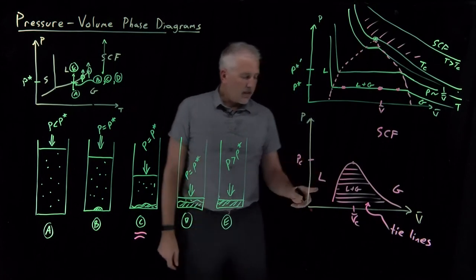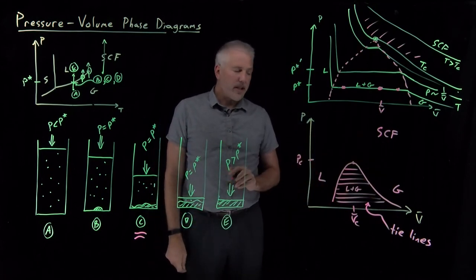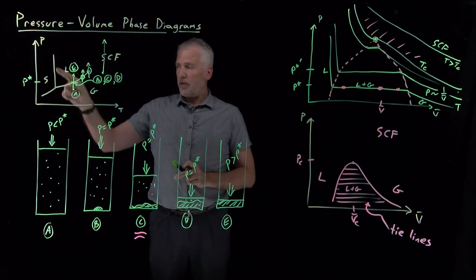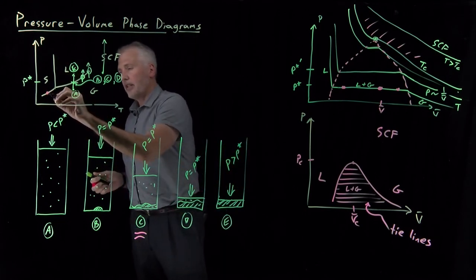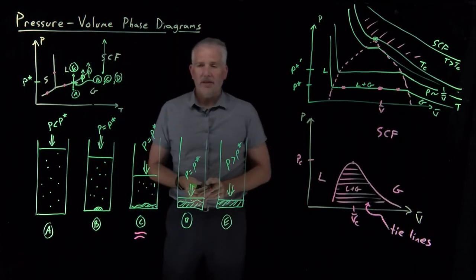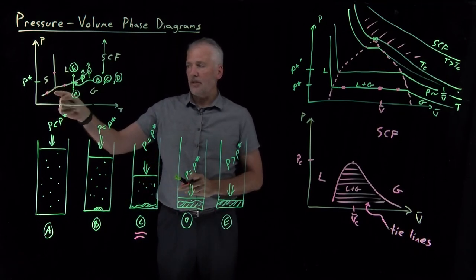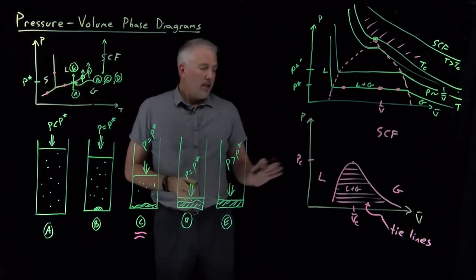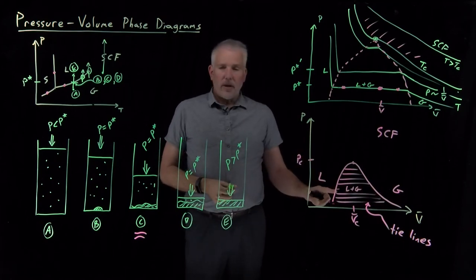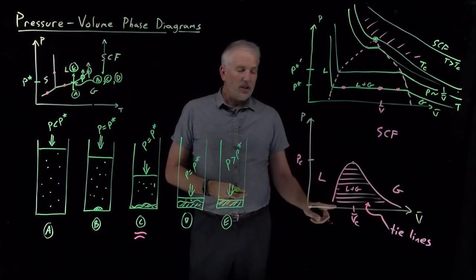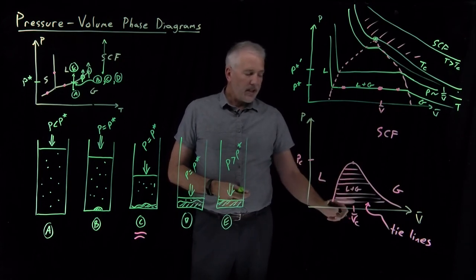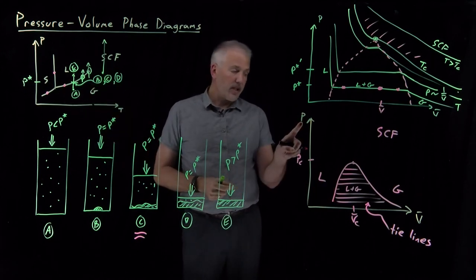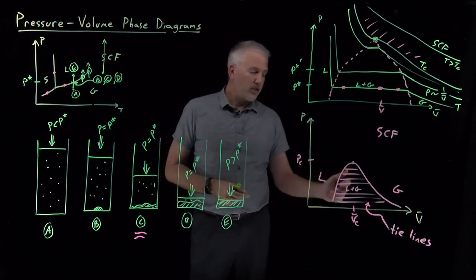Another important thing to recognize about this pressure-volume phase diagram: on a pressure-temperature diagram, the phase coexistence curves are lines — anywhere along one of those lines I have two phases in coexistence. There's a solid-gas coexistence line, a solid-liquid coexistence line, and a liquid-gas coexistence line. In a pressure-volume phase diagram, notice I don't have a phase coexistence line — I have a phase coexistence region. Anywhere in this region filled by the tie lines, I can have liquid and gas coexisting. So it's not mandatory that a coexistence curve be a line; when plotted as a function of pressure and volume, I have a whole phase coexistence region.